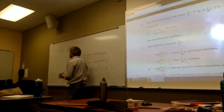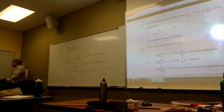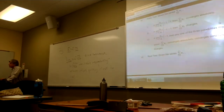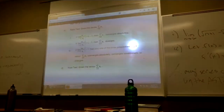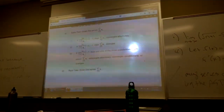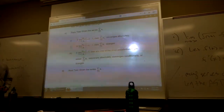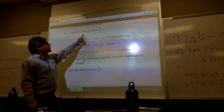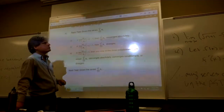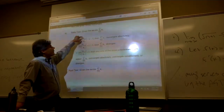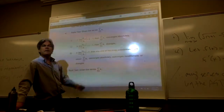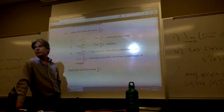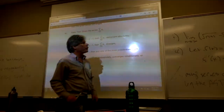Ratio test — I've got a whole new one for you. Given a series like that, if you take the limit of the ratio of the (n+1)th term to its predecessor, and that equals some number strictly less than one, then I'm going to say my series converges — and it converges absolutely.